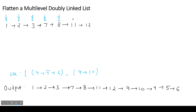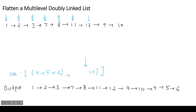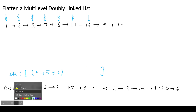We move to eleven and twelve, checking each for a child — neither has one. When the current node's next is null, it means we've reached the end of a sub-list. We pop from the stack — we pop nine and ten — and attach them after the current node. We then remove that entry from the stack.